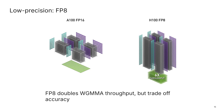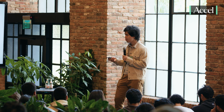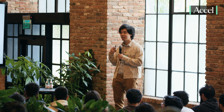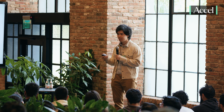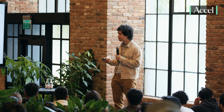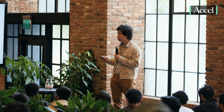Now I'll talk about low precision. Why do we care about low precision? In theory, it gives you twice the throughput essentially for free. The hardware can execute, for example, FP8 matrix multiplication at twice the throughput compared to FP16. But there's a trade-off — low numerical precision — and there are ways you need to deal with that.